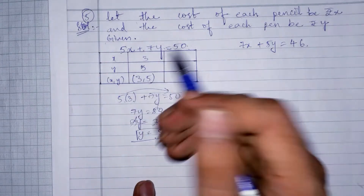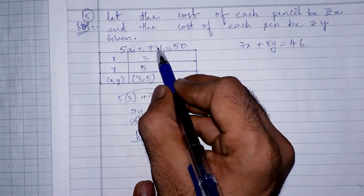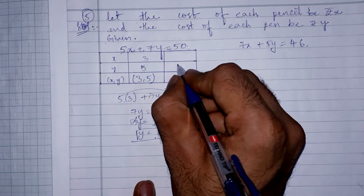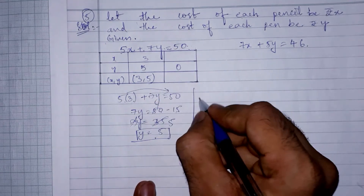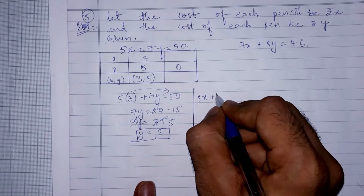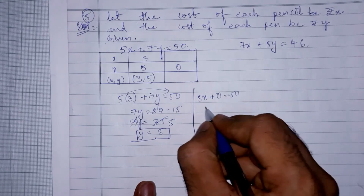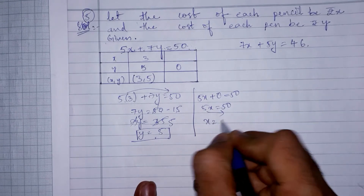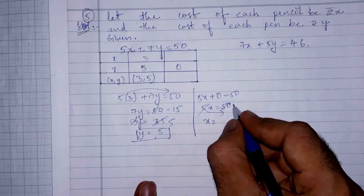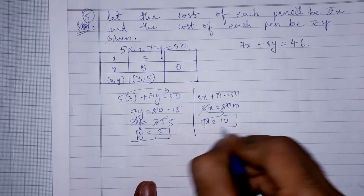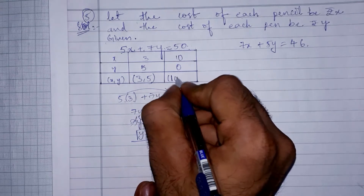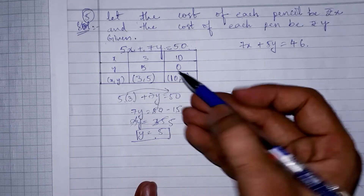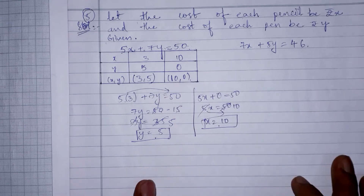For the next value, we can take y = 0 because in the 5 times table, 50 appears. So with y = 0, we get 5x = 50, which gives x = 10. So the second point is (10, 0). We need to be careful while drawing the graph since 10 is a somewhat large value on the x-axis.